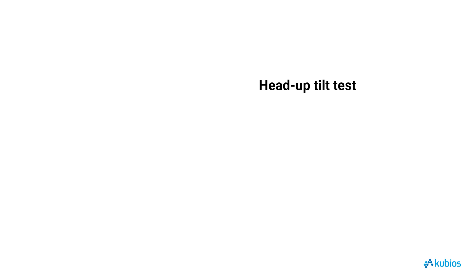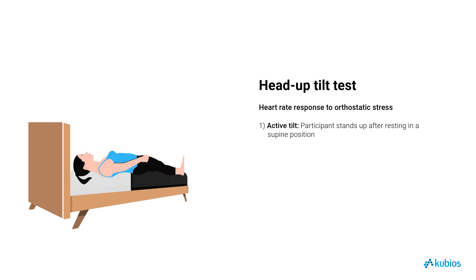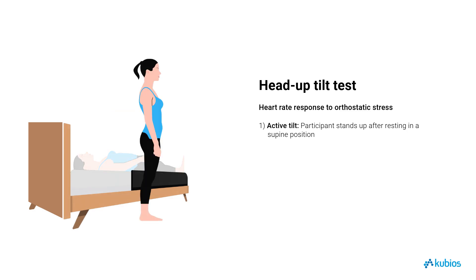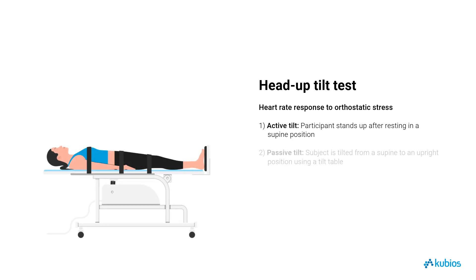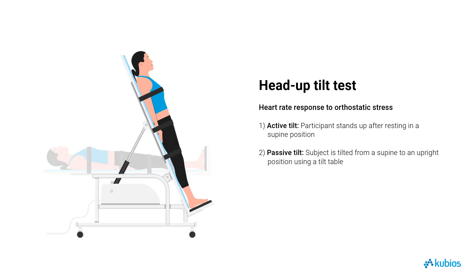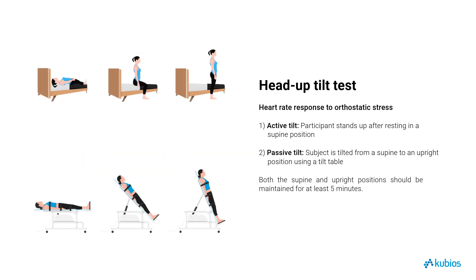The third standard Autonomic Function Test evaluates the heart rate response to orthostatic stress, commonly induced by a head-up tilt. This test can be conducted through an active tilt, where the participant transitions from a supine to a standing position. It's crucial to ensure the participant does not experience a fall due to potential orthostatic hypotension during this active tilt. Alternatively, a passive tilt can be performed utilizing a tilt table. To ensure accurate assessment of heart rate and HRV, both the supine and upright positions should be maintained for a minimum of five minutes.